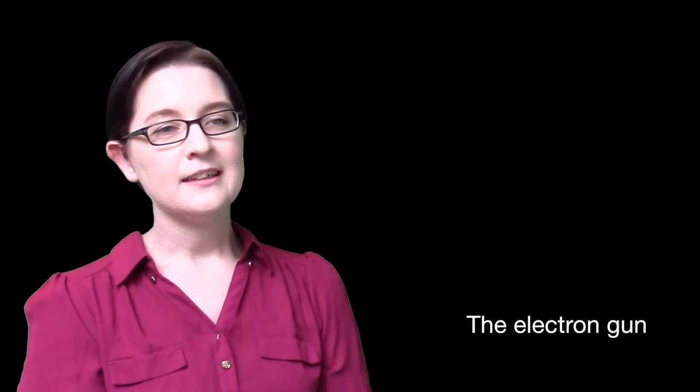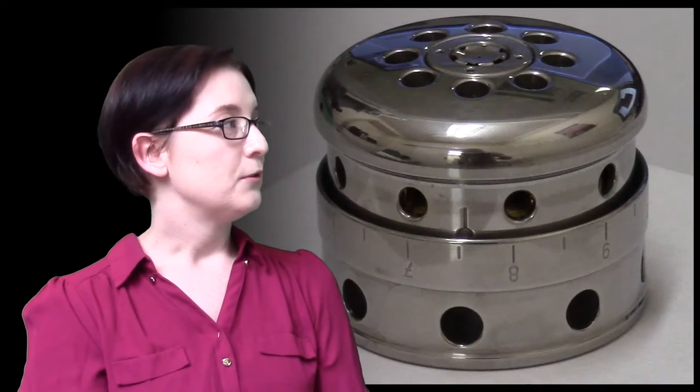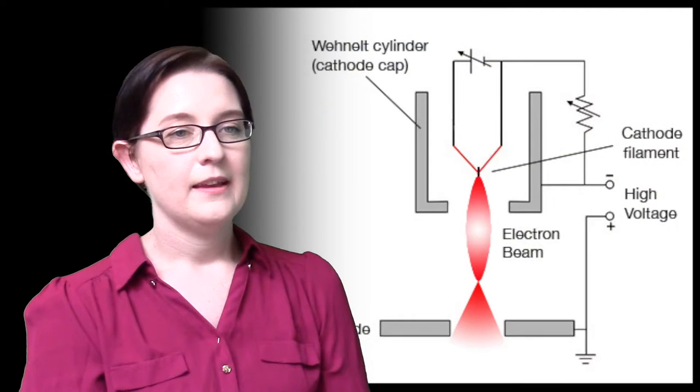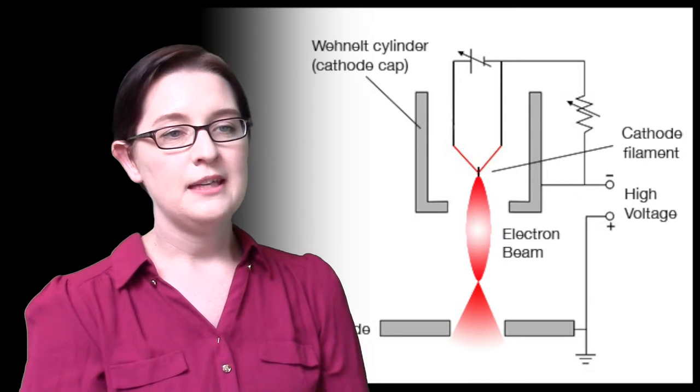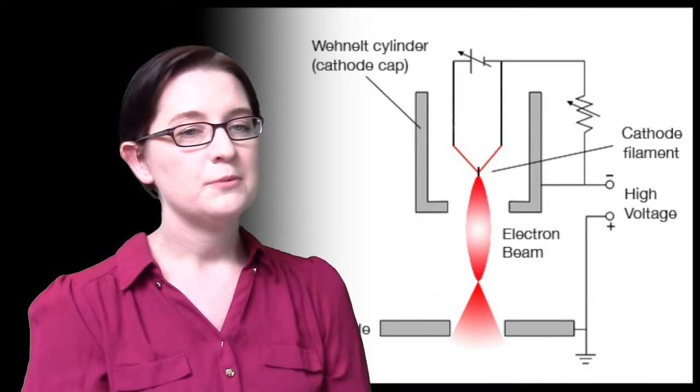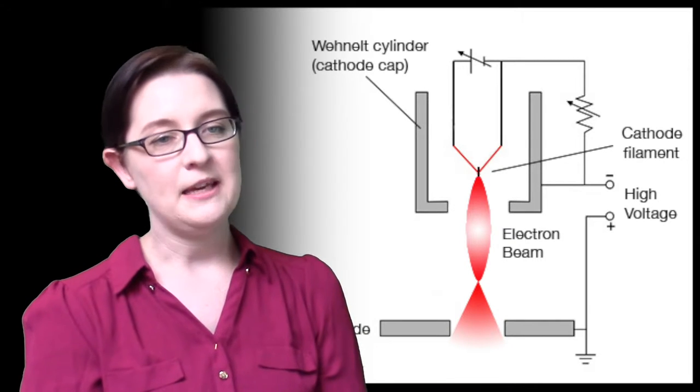The electron gun consists of an electron source—the filament, which also acts as the cathode—shield, and anode. A current is run through the filament to heat it, resulting in the emission of electrons from the tip. The high voltage difference between the shield and the anode causes the electrons to accelerate and form a beam.